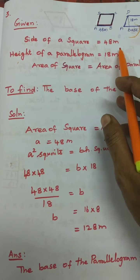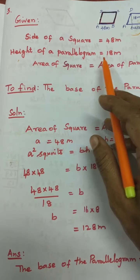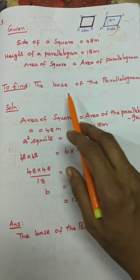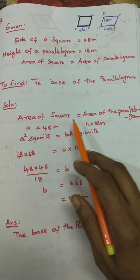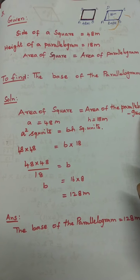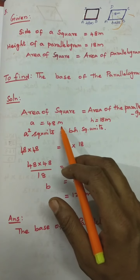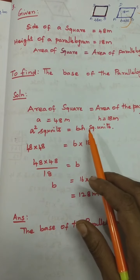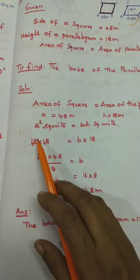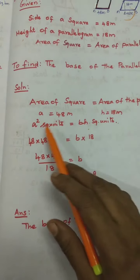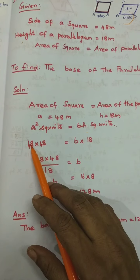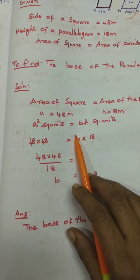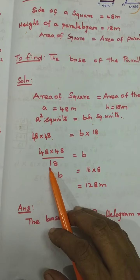Side of square = 48 m, height of parallelogram = 18 m. Area of square = area of parallelogram, so a² = B × H. That is 48 × 48 = B × 18. Keep B on one side and bring 18 to the denominator: B = (48 × 48) ÷ 18.